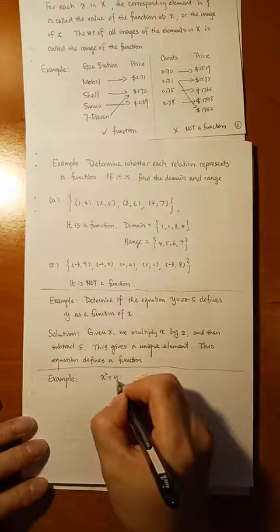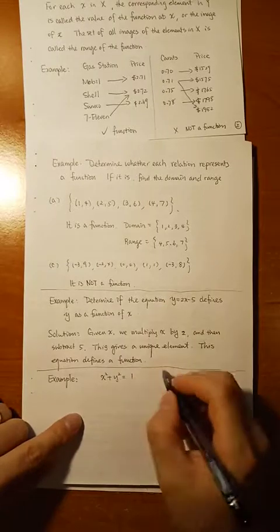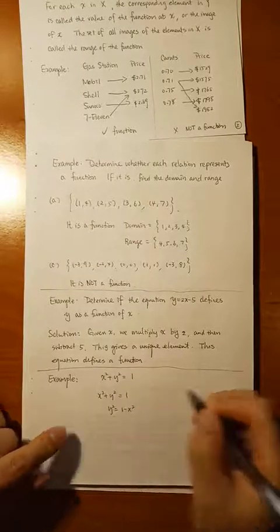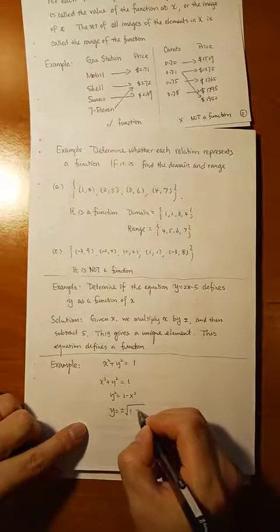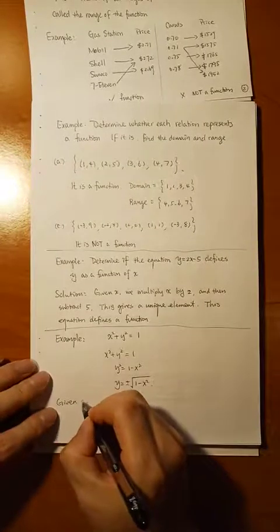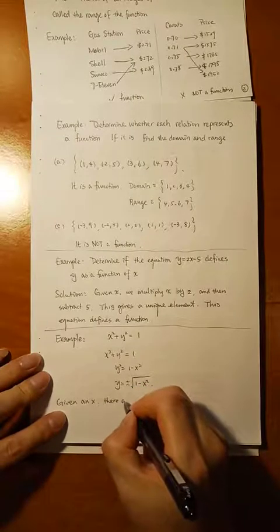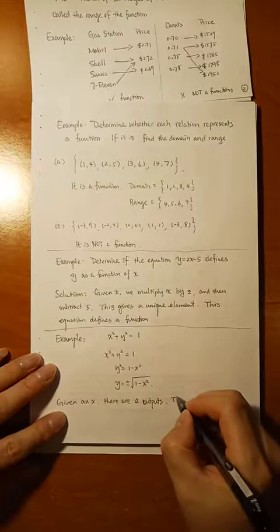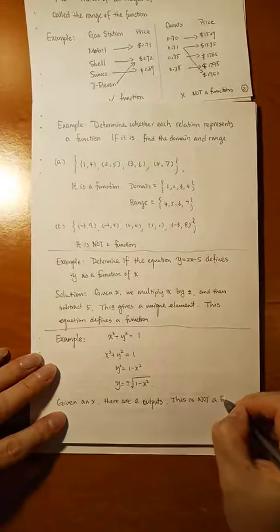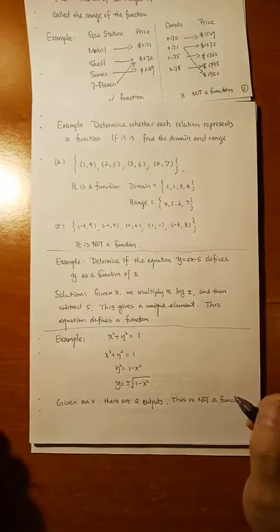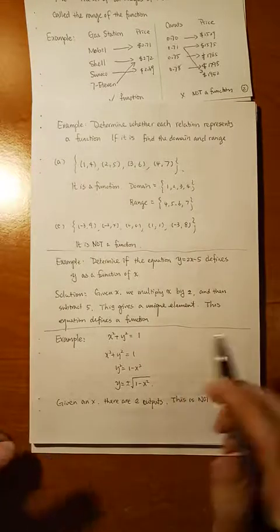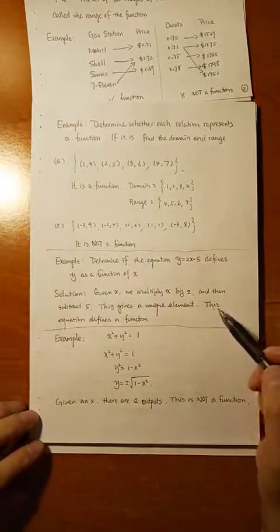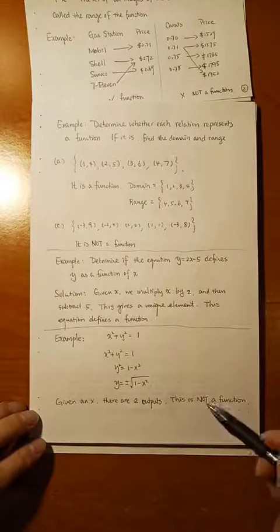Consider x² + y² = 1. We want to see if y is a function of x. Starting from x² + y² = 1, we get y² = 1 − x². Taking the square root gives y = ±√(1 − x²). Given one x, there are two possible outputs. So this is not a function — from one input, you have multiple outputs.